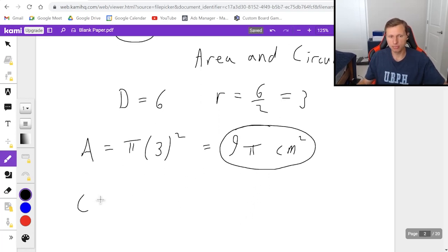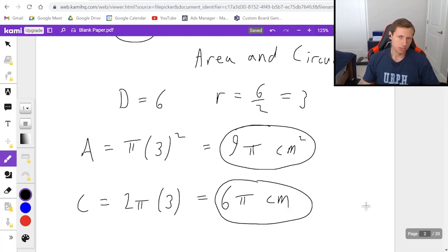Then the circumference is going to be 2 pi times R, which is 3. 2 times 3 is 6. So the answer is going to be 6 pi. And the units for a circumference is not centimeters squared. It's just centimeters. So that's it for the first one. Hopefully that's really easy.